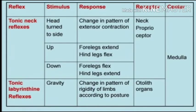Long loop stretch reflex: stimulus is stretch of the muscle due to swaying of the body. Response: continuous, moment-to-moment correction of sways which occurs during standing. Receptors: muscle spindle and visual receptors. Centers: one at the spinal cord and one at the level of the cerebral cortex.